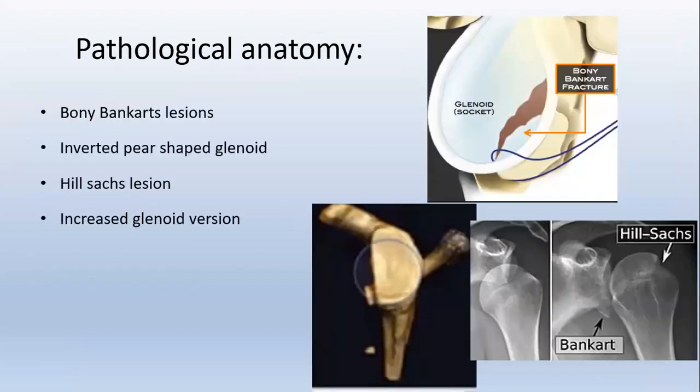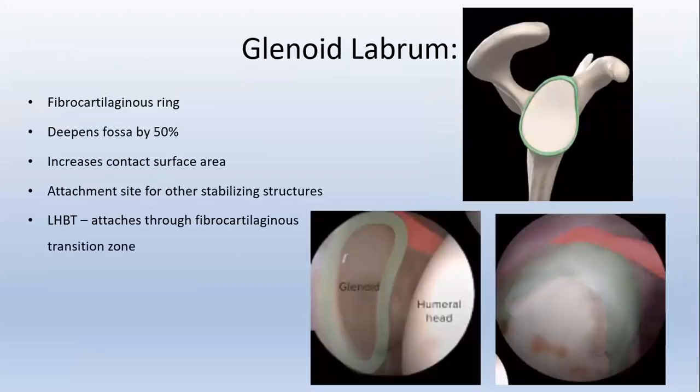Pathological anatomy involves the bony Bankart lesion, inverted pear-shaped glenoid, Hill-Sachs lesion, and increased glenoid version, which will be dealt with in this presentation. The glenolabrum is composed of both fibers and cartilage. The glenoid labrum deepens the glenoid by about 50% and also increases the contact surface area.